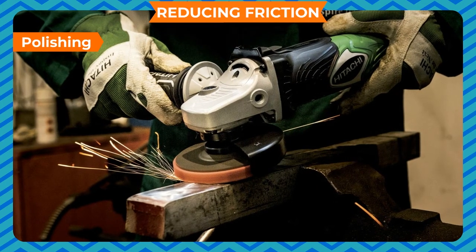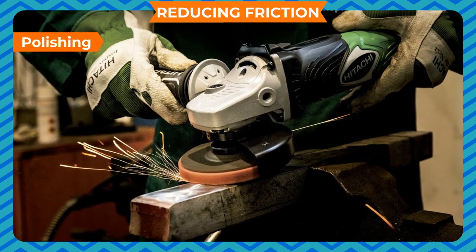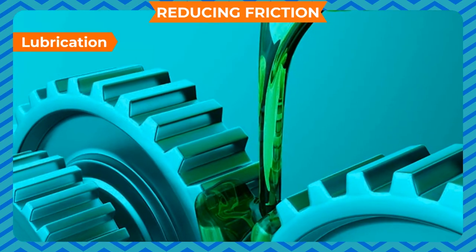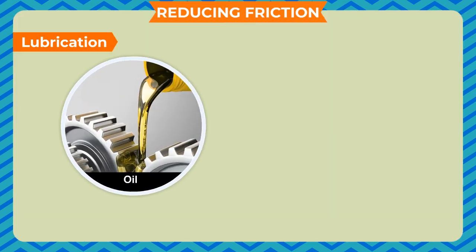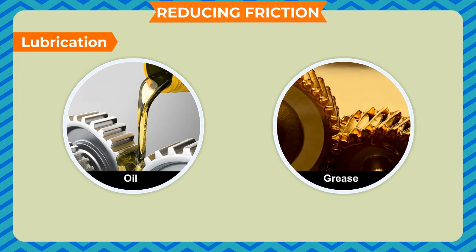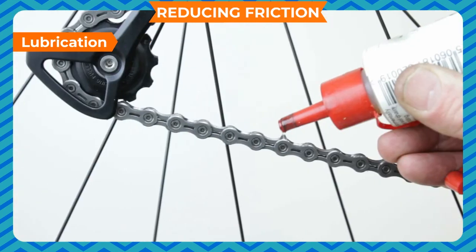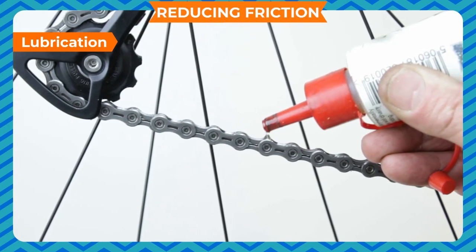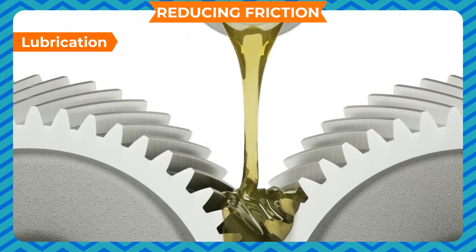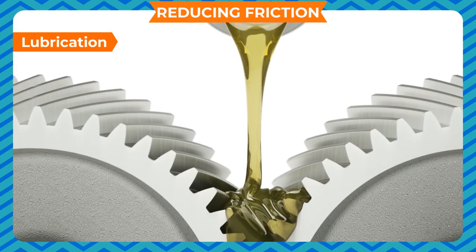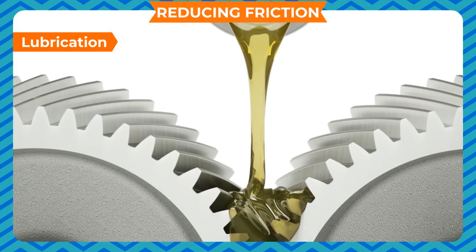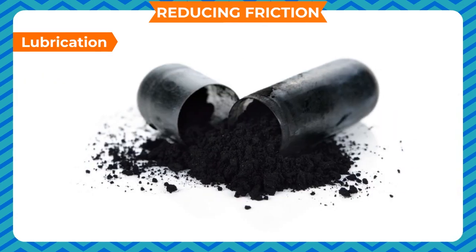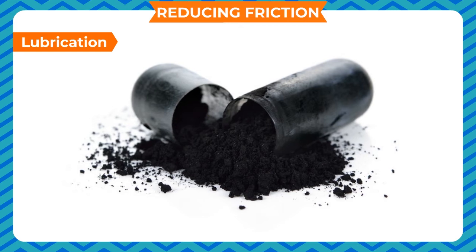Polishing reduces friction by making surfaces smooth. Lubrication — applying a lubricating substance like oil or grease — also reduces friction, as the friction between the object's surface and the lubricant layer is much less. In cases where machine parts get heated to very high temperatures, graphite may be used as a lubricant.